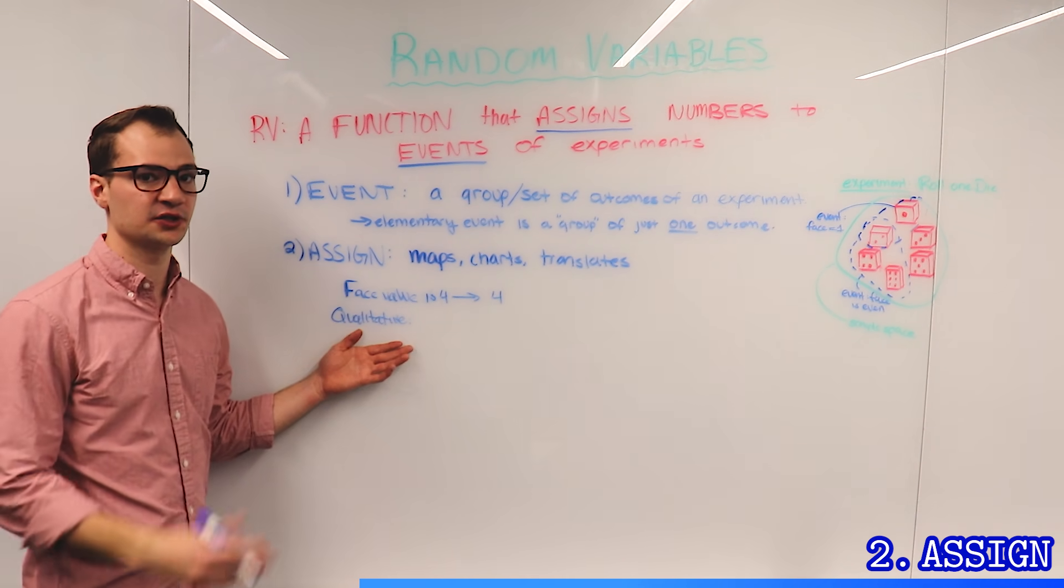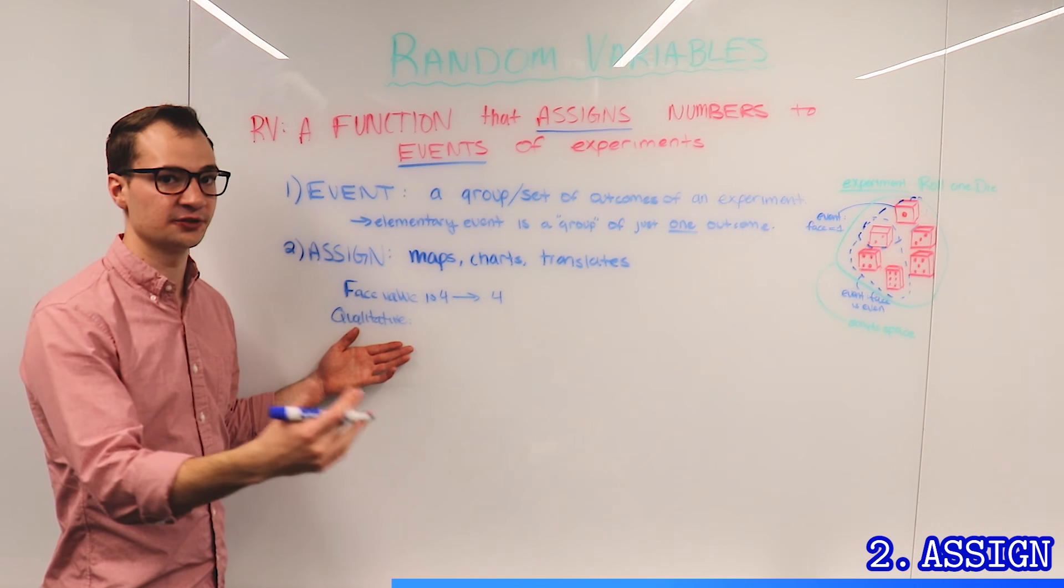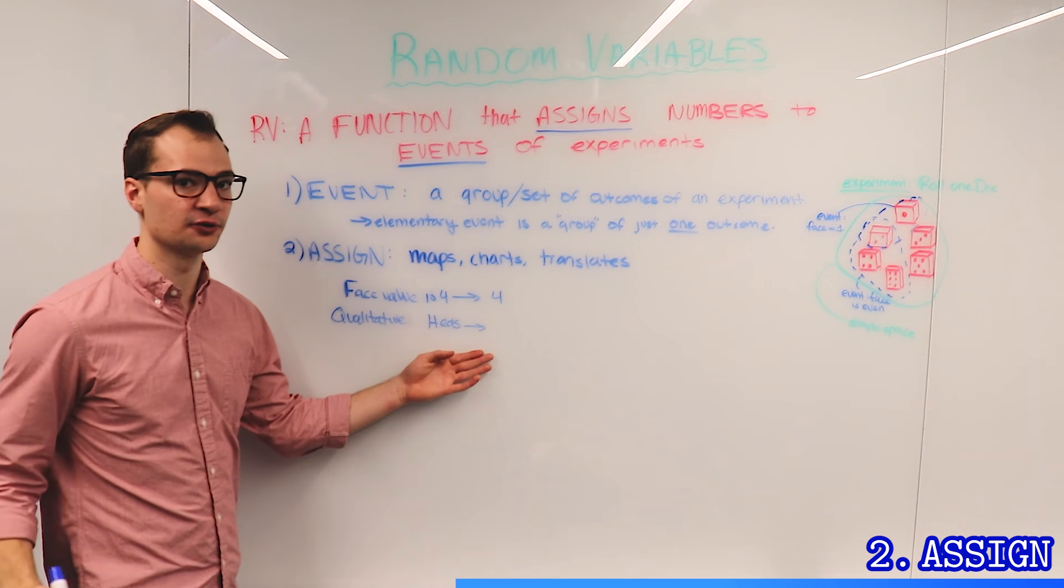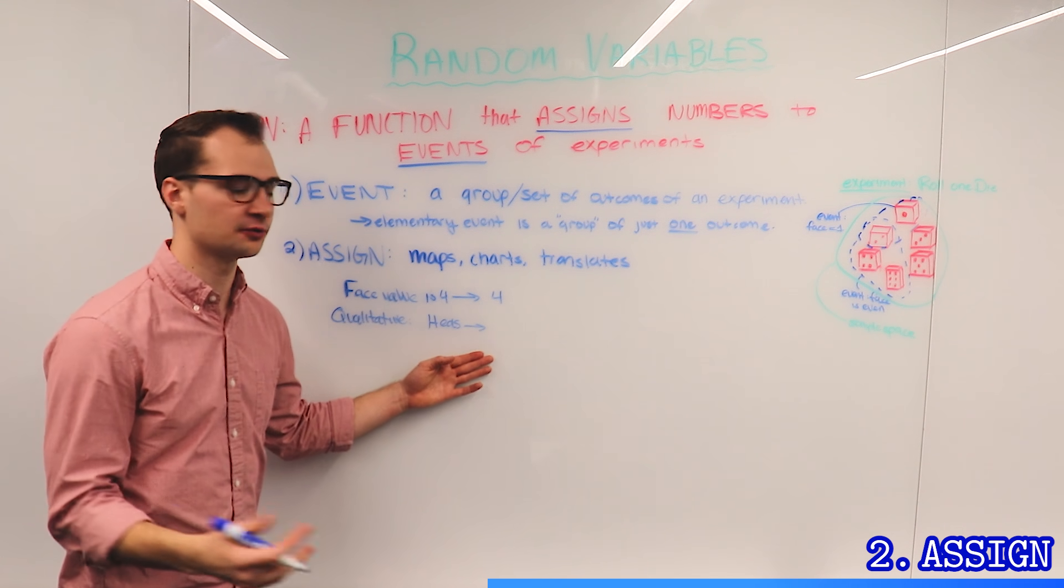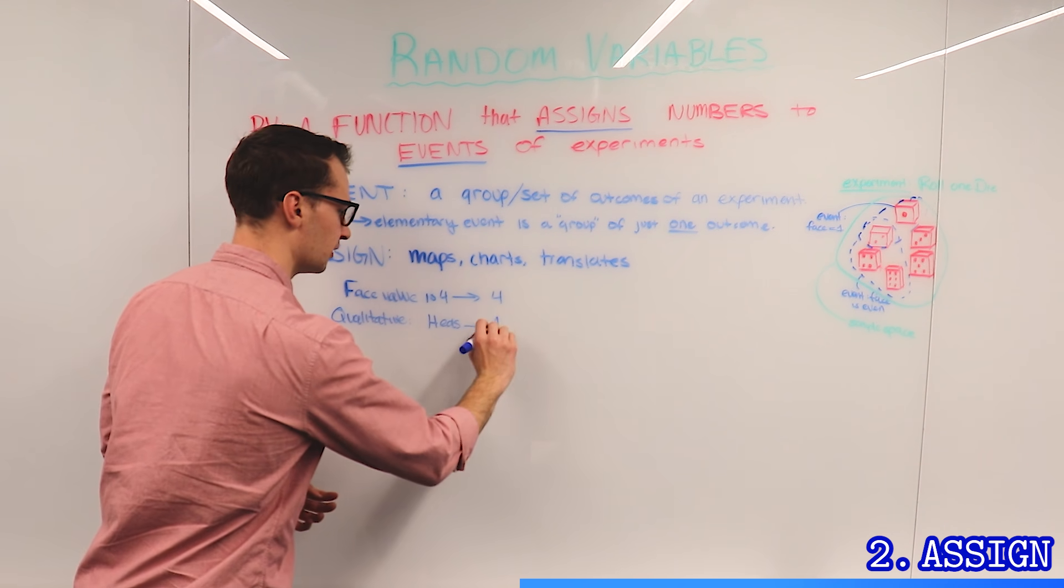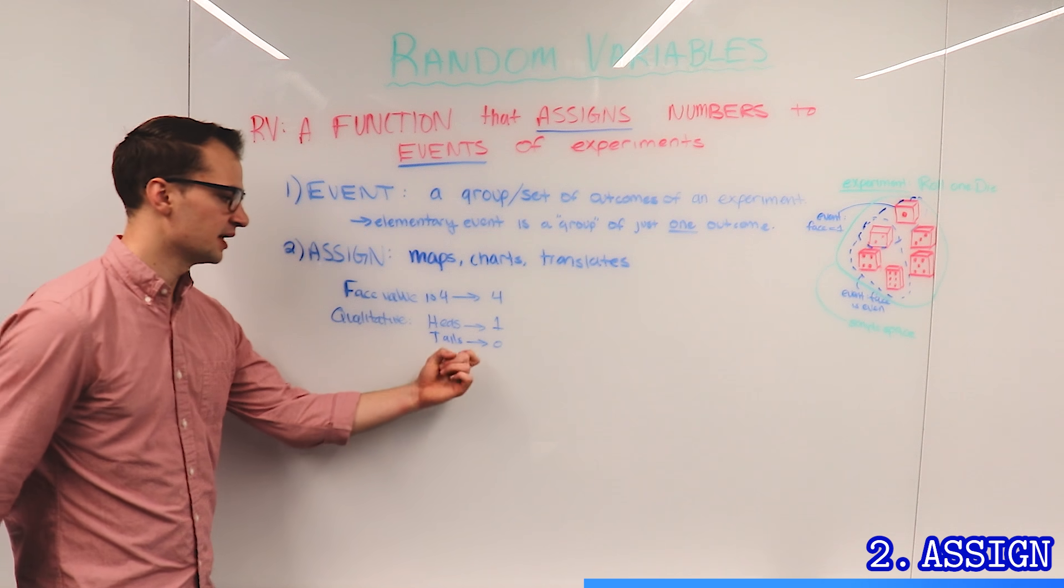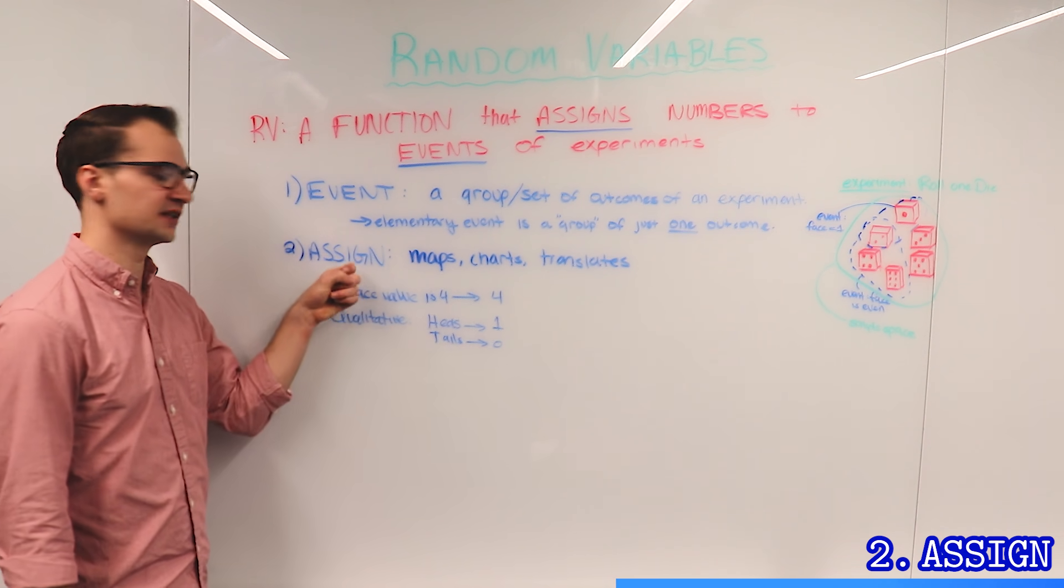A qualitative event could be you flip a coin and you get heads. Well, that's a word, and we want to translate it into an actual number that we can do math with. So let's call a heads 1 and a tails 0. This arrow captures the assignment.